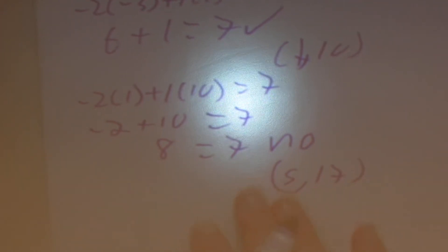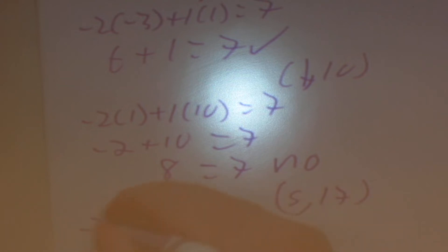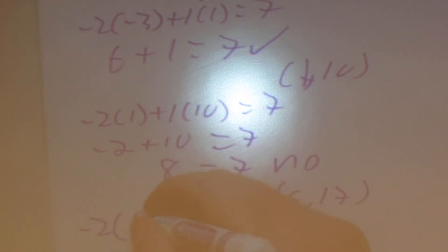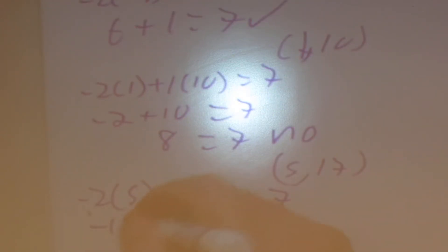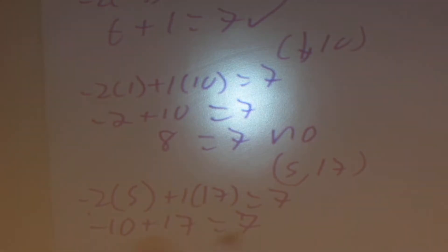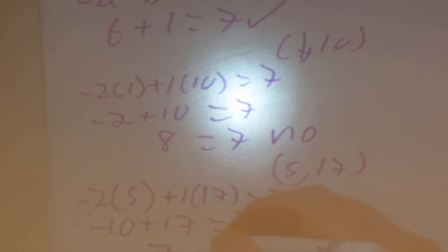For the point (5, 17): substitute x = 5, so -2 times 5 plus 1 times 17 equals -10 plus 17 equals 7. Since 7 equals 7, yes, that one is a solution as well.